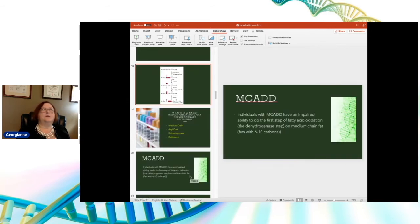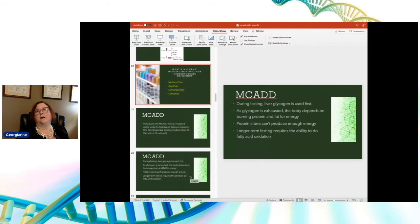So just to summarize what we talked about so far, during fasting, you use your liver glycogen up first. And when that gets exhausted, you then begin to depend on burning protein and fat for energy. Protein alone can't get the job done. You have to have energy from fat. So longer term fasting between normal meal times requires the ability to do fatty acid oxidation.